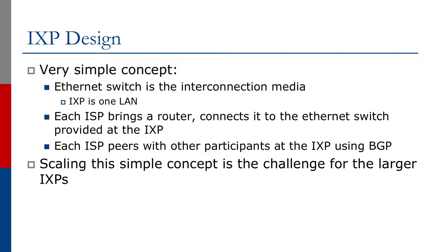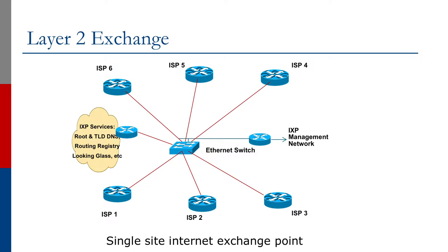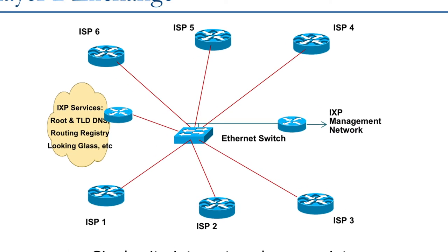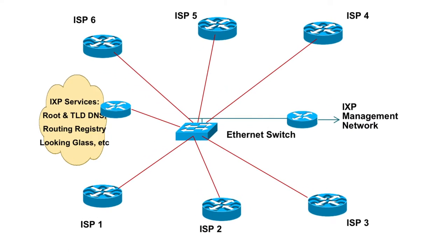Scaling this simple concept is the challenge for the larger IXPs. The diagram shows a typical simple layer 2 exchange. We have the Ethernet switch in the middle, six ISPs connected to the Ethernet switch, and we also have the IXP services — for example, the root or TLD DNS servers, perhaps a routing registry, looking glasses and other services.